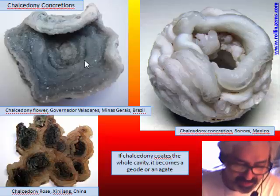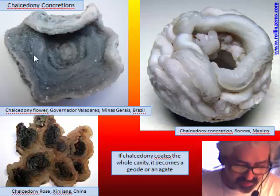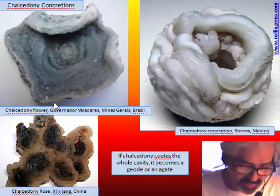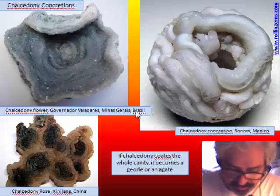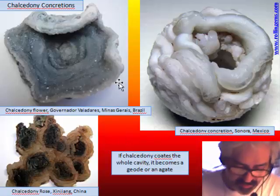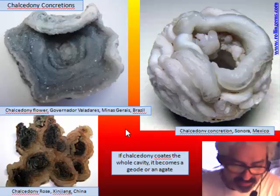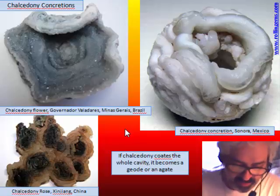This is the end of the crystallization of the chalcedony. These are called in some cases flower, rose, or concretion depending on the location, but they are very similar all over the world.